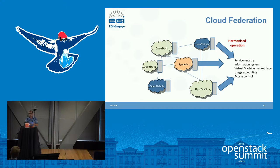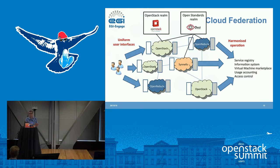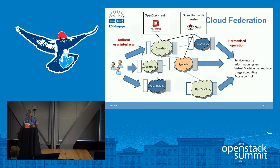What we do in this cloud federation is provide harmonized operation of the resources. We federate by harmonizing operations — that means a single service registry, an information system with resource availability data, a virtual machine marketplace, accounting information collection, and harmonized access control. For users, we provide uniform interfaces through the concept of 'realms': every provider of a given realm must use the same interface. We have two realms: the OpenStack realm using the OpenStack API, and the open standards realm using OCCI, an OGF standard.